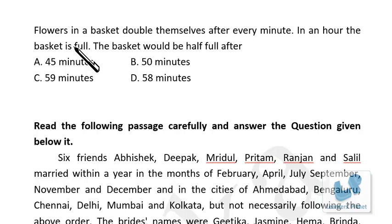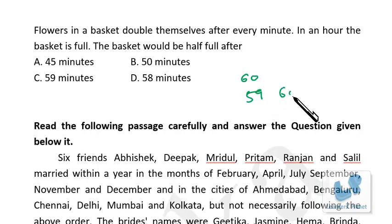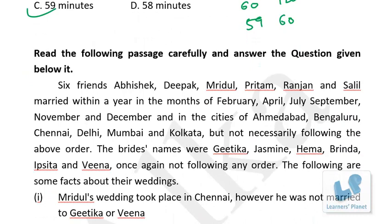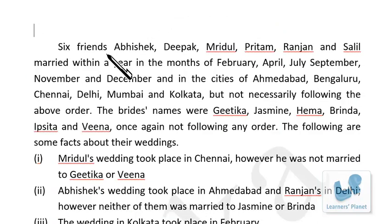The flowers double every minute. At 59 minutes, suppose there are 60 flowers; on the 60th minute they will be 120 flowers and the basket will be full. Since in an hour the basket is full, that means the basket is half full at 59 minutes, because in one minute the flowers in the basket get doubled. So the answer is 59 minutes.